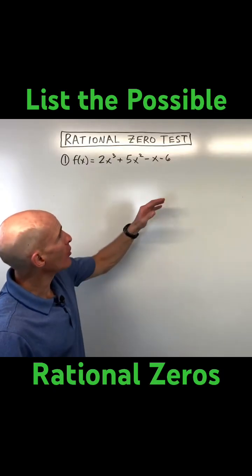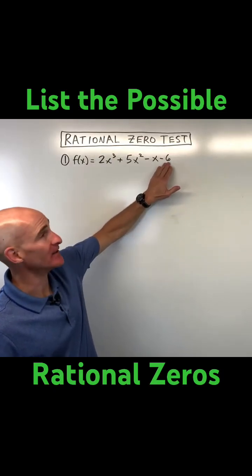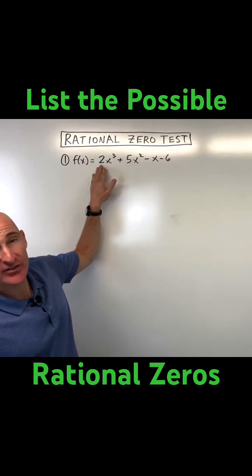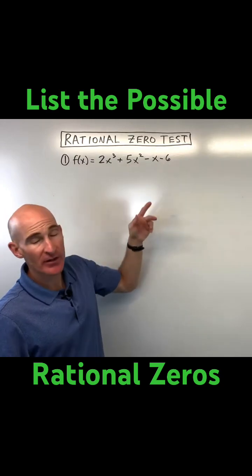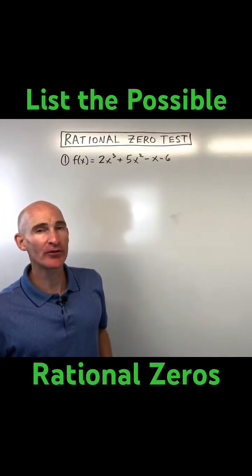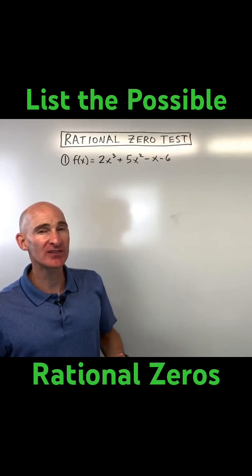What you do is you take all the factors of the constant divided by all the factors of the leading coefficient. Now this only works if the coefficients, meaning the numbers in front of the variables, are integers. So if they're radicals or imaginary numbers, this is not going to work.